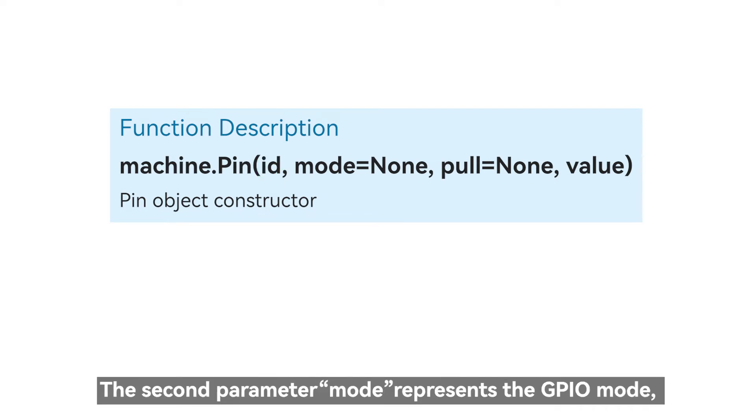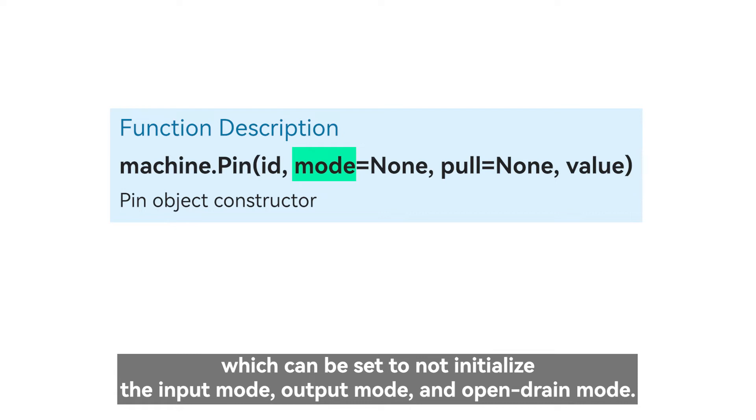The second parameter mode represents the GPIO mode, which can be set to not initialize the input mode, output mode, and open drain mode.